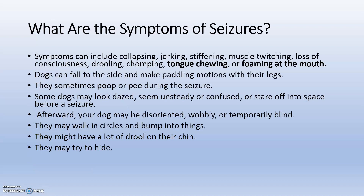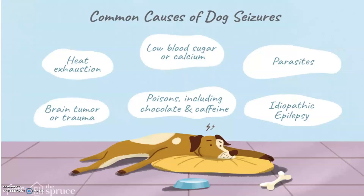The symptoms of seizure include collapsing, jerking, stiffening, muscle twitching, loss of consciousness, drooling of saliva, chomping, tongue chewing, or foaming at the mouth. Sometimes they may poop or pee during the seizure. They fall to the side and make paddling motions with their legs, try to hide behind something, and look unsteady, confused, or stare into space. Before a seizure they might drool heavily, walk in circles, and bump into things.